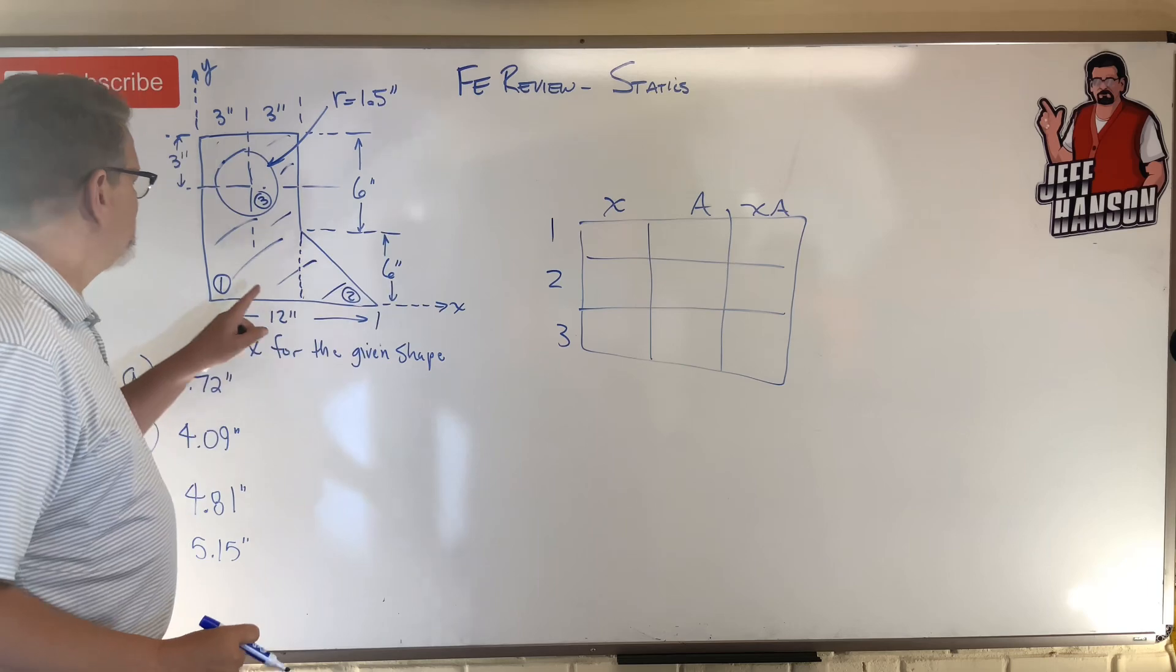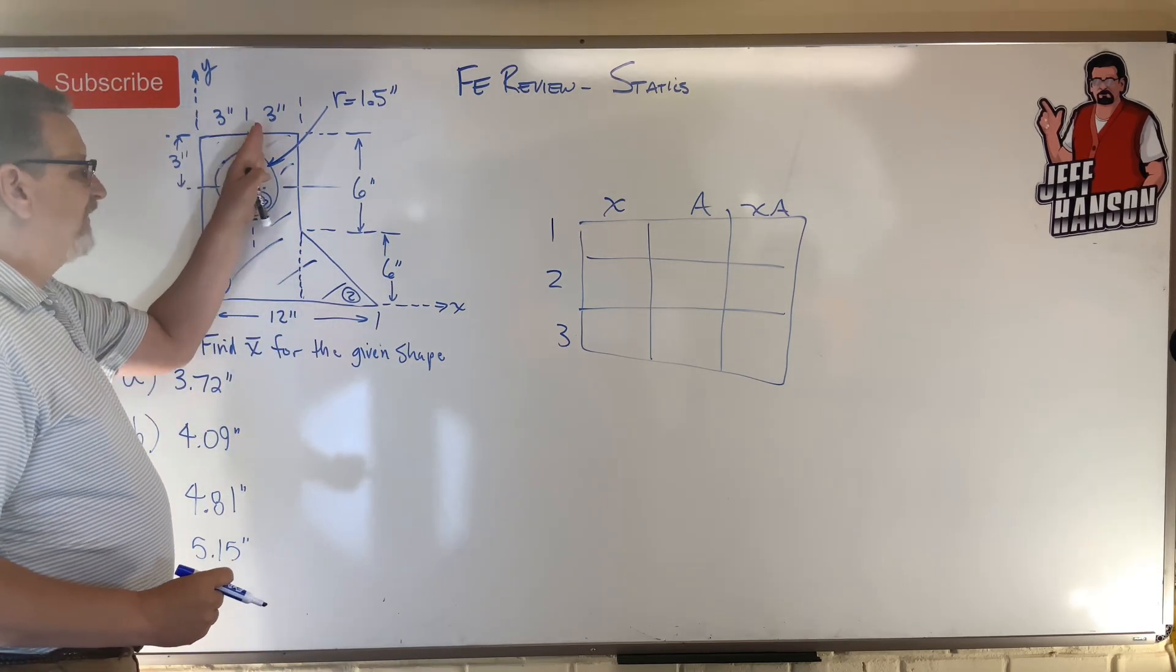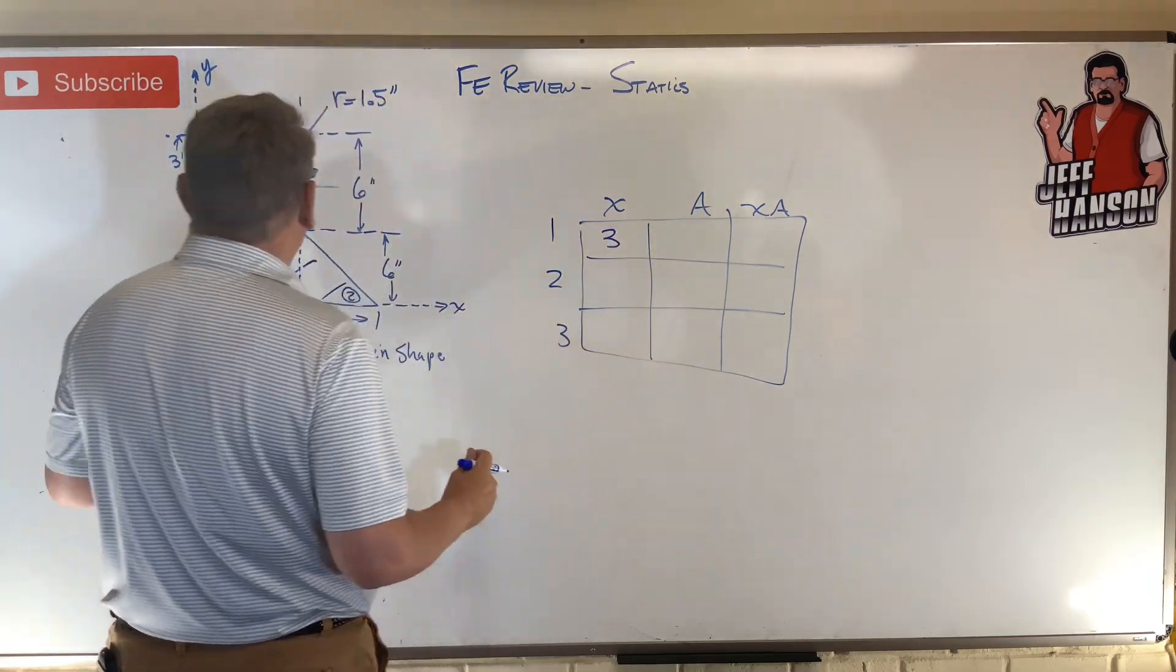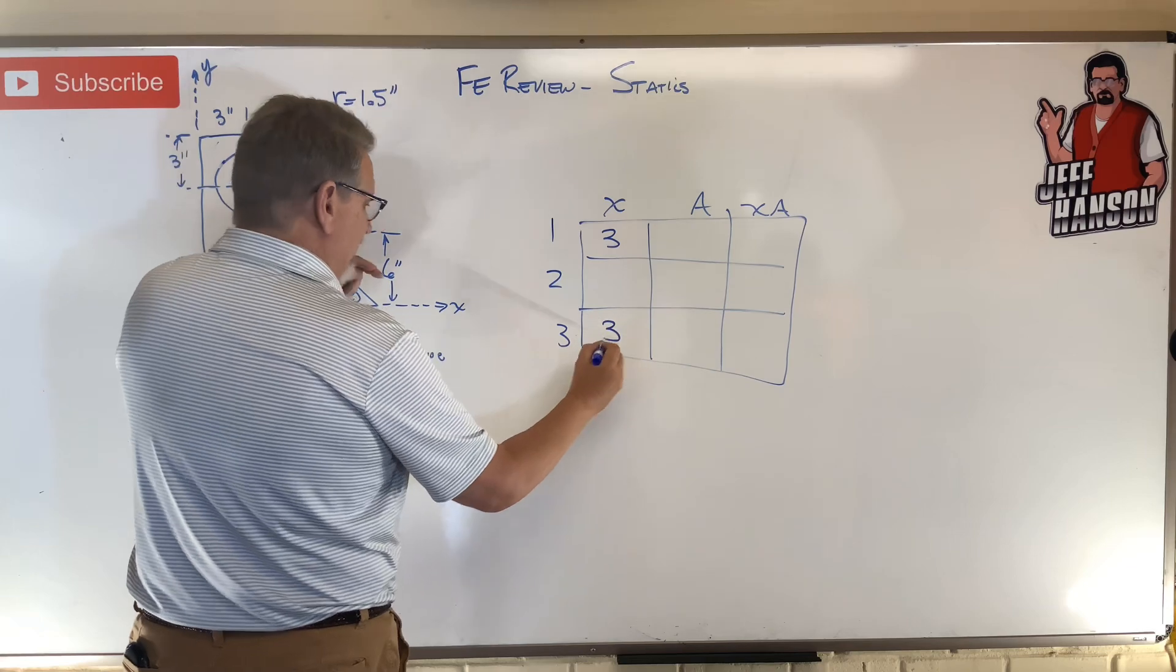So where is X bar for shape one? X bar, half of six, which is three. Oh, the circle also, where's the center of the circle? Three.